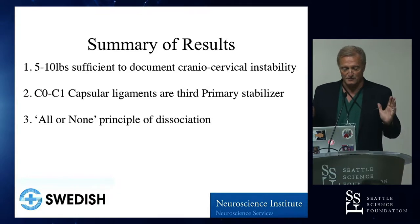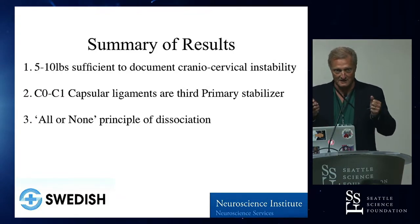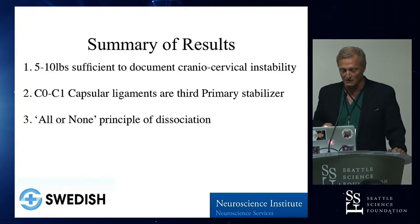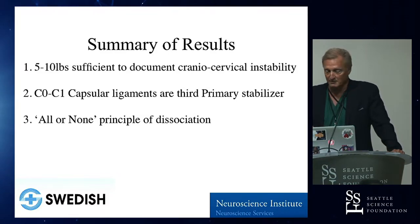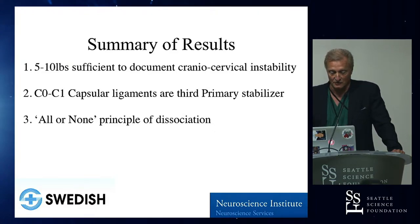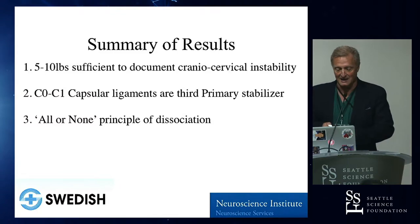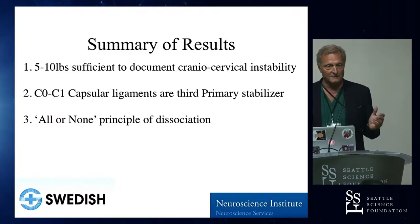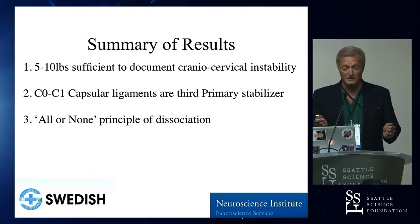Five to ten pounds is perfectly enough to show cranial-cervical stability, and it's in an axial form so it's very safe for the neural elements. The cranial-cervical capsule ligaments are the third primary stabilizer behind the infamous tectorial membrane and the alar ligaments. If there is a question of cranial-cervical instability, it probably follows an all-or-nothing principle — if you have instability, it is unstable, and you've got to fix it.